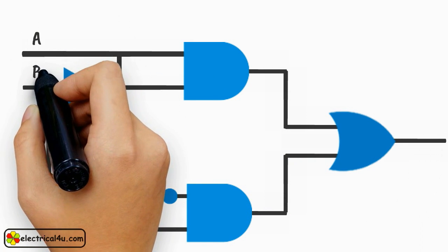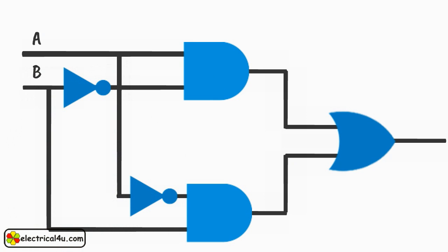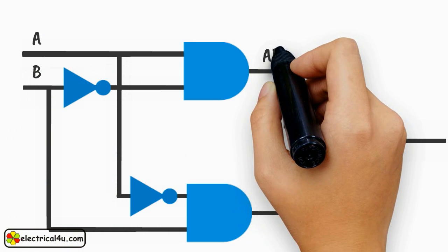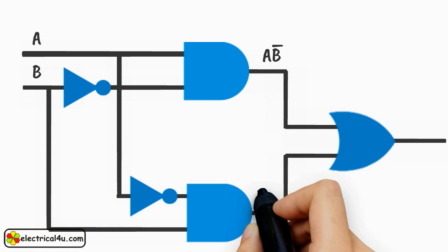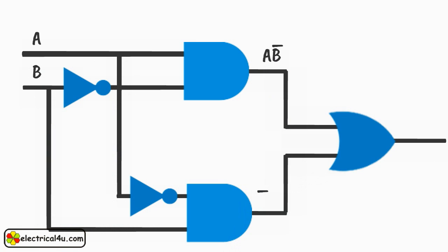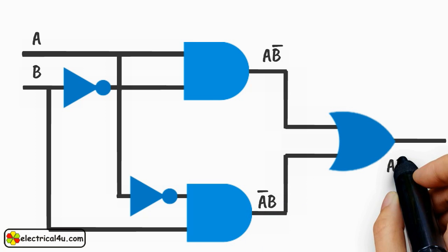Here, A and B are inputs to this logic circuit. The output of this AND gate is AB bar and output of this AND gate is A bar B. These two outputs then are added through this OR gate and gives AB bar plus A bar B.